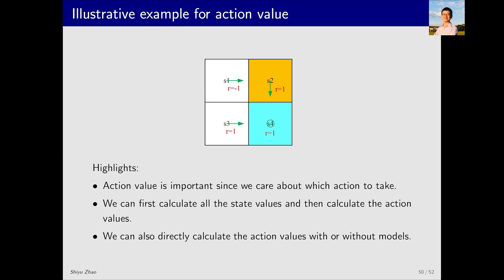Overall, action value is important because we care about all actions in any state and later need to compare them to choose the one with the highest action value. There are two methods to calculate action values. The first method involves knowing the state value — for instance, after solving the Bellman equation, we can calculate action values from the state value using the expression discussed earlier. Alternatively, we can calculate action values directly without computing state values, such as through experience data. This approach may or may not rely on the model, and we will provide detailed introductions in the future.